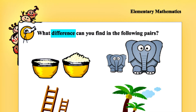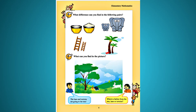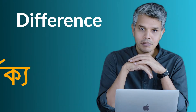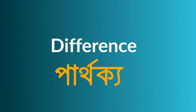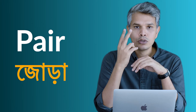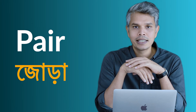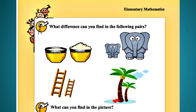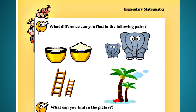What difference can you find in the following pairs? When we use pairs, the first one is the difference. The same pairs — the pair is the pair. The other pair is the pair.